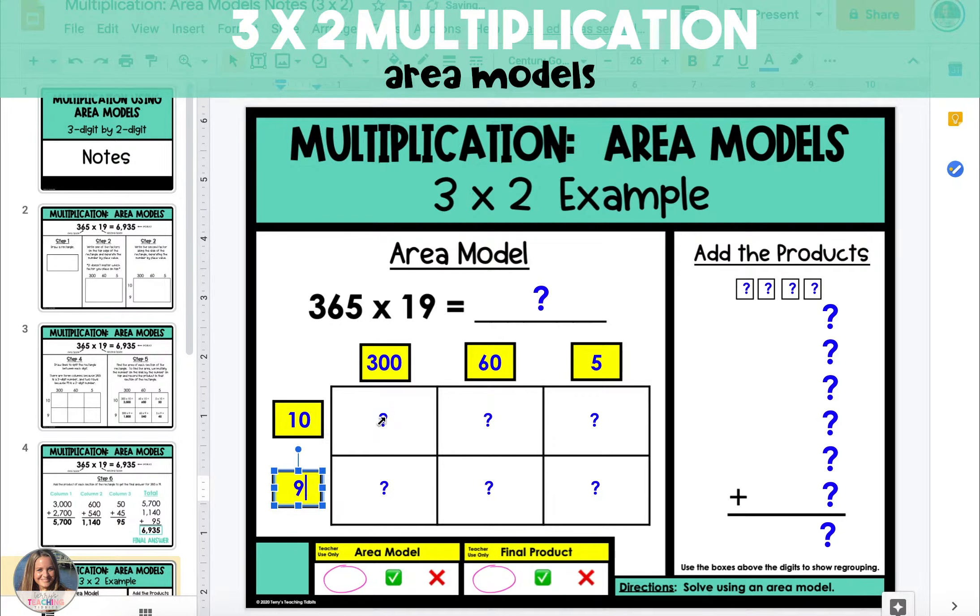Now we're going to find the area of each section of the rectangle, and to do this we're going to multiply the number above the section by the number to the side of that section.